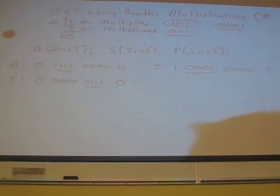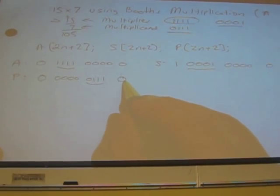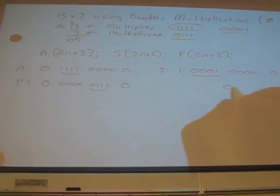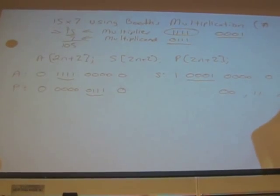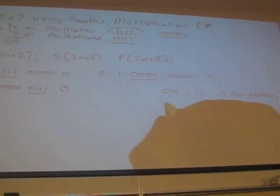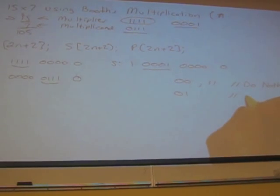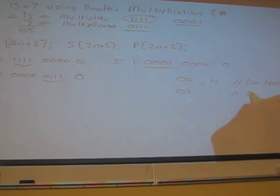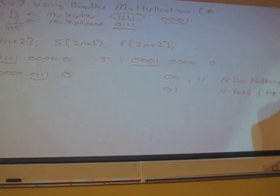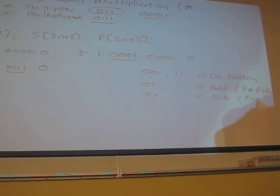The 4 conditions: every step in the algorithm, we look at these last 2 bits and compare what we should do. If it's 0, 0 or 1, 1, we're going to do nothing. If it's 0, 1, what do we do? P plus A. So, we're going to add. And if it's 1, 0, what do we do? Subtract. P equals P plus S.